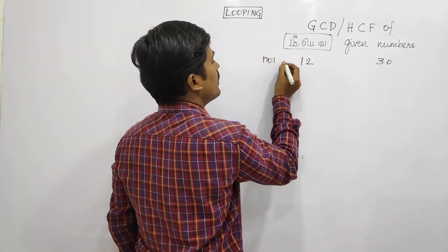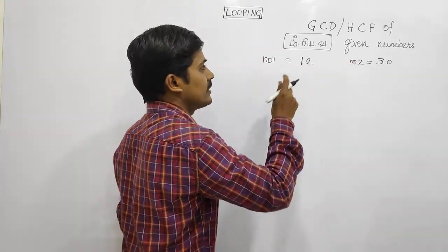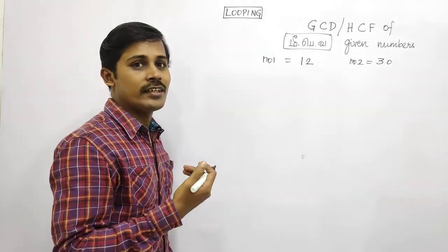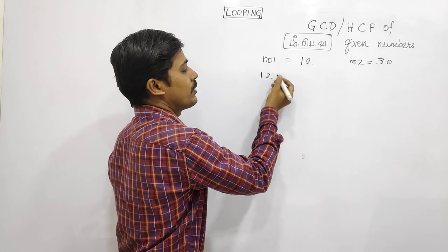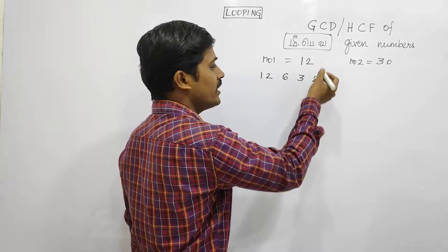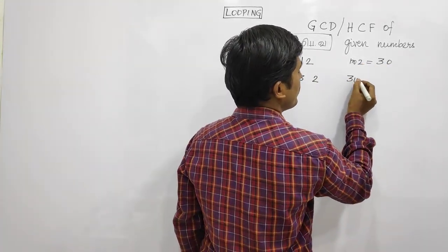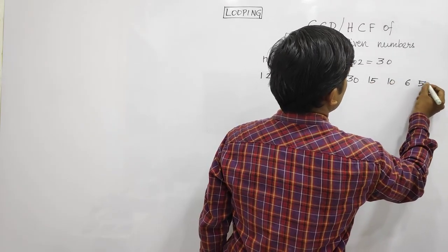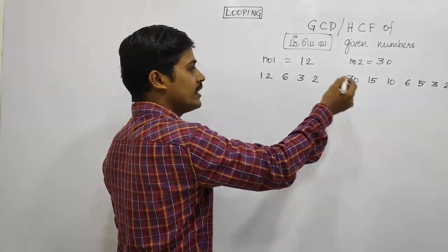Number 1 is 12, number 2 is 30. These are the factors — the common divisors. For 12, the divisors are: 1, 6, 3, 2. For 30, the divisors are: 1, 10, 6, 5, 3.